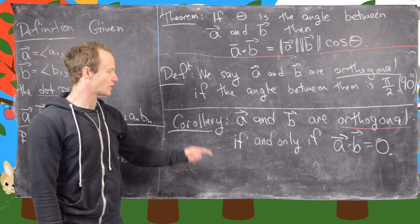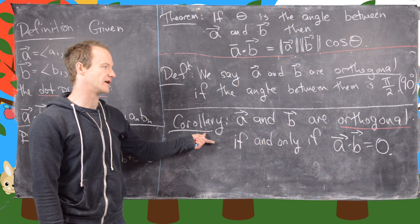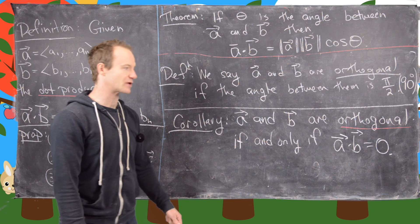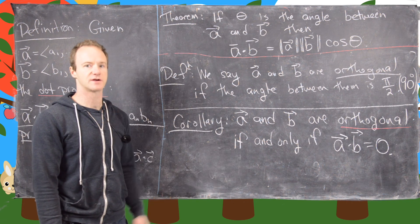Okay, so I want to reiterate how important this corollary is. We'll use it all the time as a defining property of orthogonal vectors. Okay, so this is the end of the video.